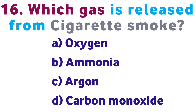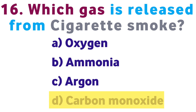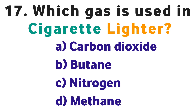Question number sixteen: Which gas is released from cigarette smoke? Option A: Oxygen, B: Ammonia, C: Argon, D: Carbon monoxide. Correct answer is D: Carbon monoxide.